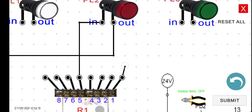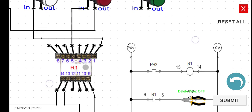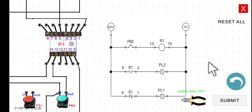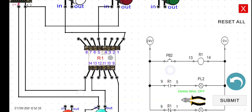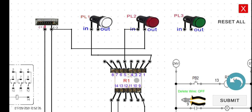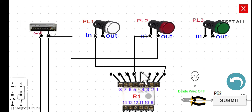Connect terminal 1 to the input of PL1. Next, connect the output of PL1 to the zero-volt terminal, or we can connect it to the output of PL2. Since we already have two connections there, it would be better to connect it to the output line at that point.